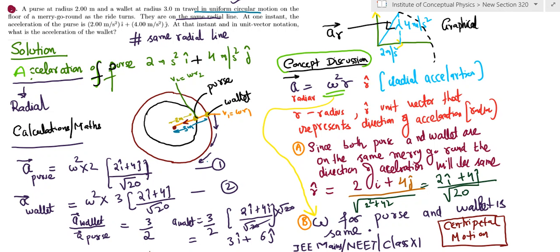The wallet and purse are in the same straight radial line, moving in a circle. The question states that the acceleration of the purse is given in vector notation, and you have to find the acceleration of the wallet.